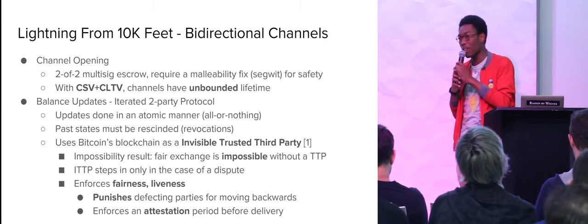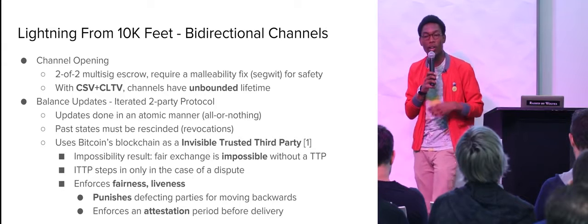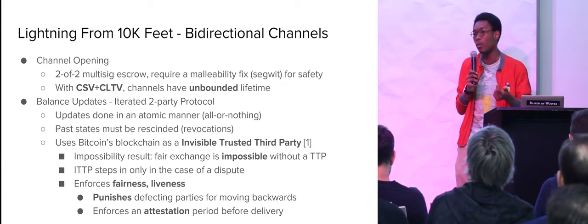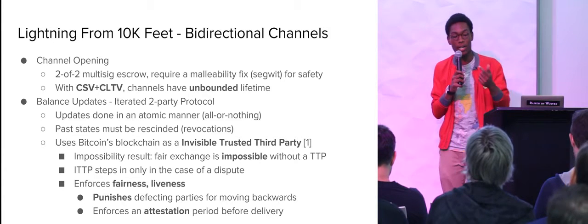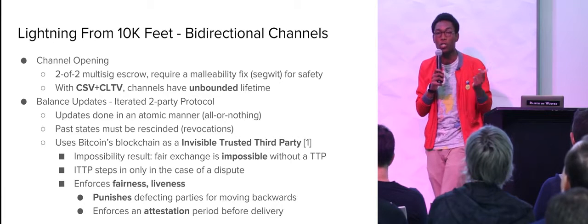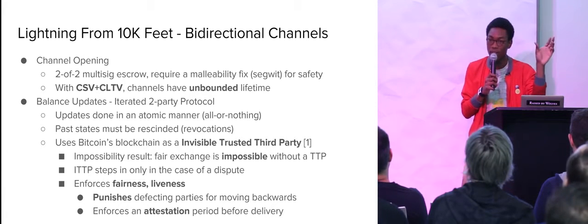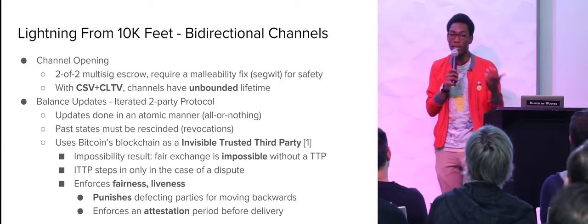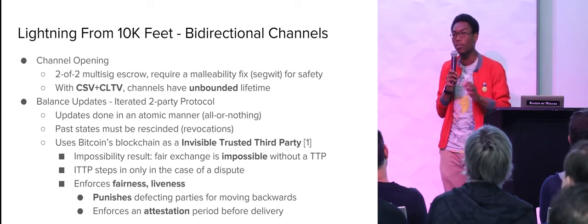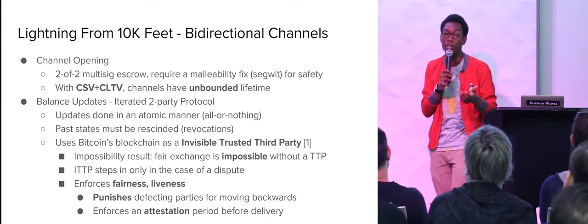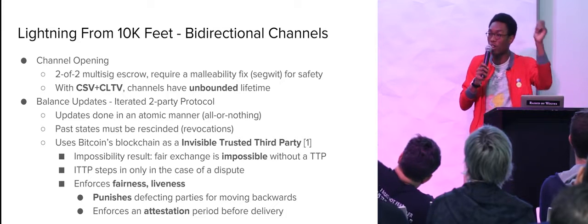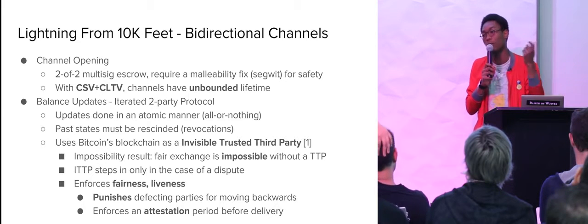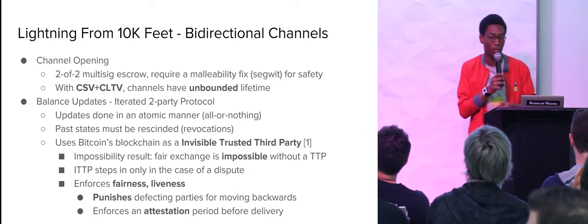Lightning from 10,000 feet: bi-directional channels. Initially with a regular payment channel, you have a two-of-two multisig escrow where Alice and Bob put, say, one Bitcoin each into the escrow. In order to do this protocol safely — because we have nested transactions with the funding transaction and the commitment transaction — we require some sort of malleability fix. The one we currently use within our software is SegWit, or Segregated Witness. Without this fix, Bob could malleate the transaction, get Alice's funds stuck, and then essentially extort her.